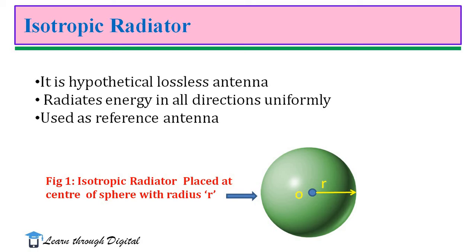As it radiates uniformly in all directions, it is also called omnidirectional radiator. Basically, isotropic radiator is a lossless ideal radiator or antenna. Generally, all practical antennas are compared with the characteristics of the isotropic radiator. Therefore, the isotropic radiator or antenna can be used as the reference antenna. Practically, all antennas exhibit directional properties, i.e., directivity property.